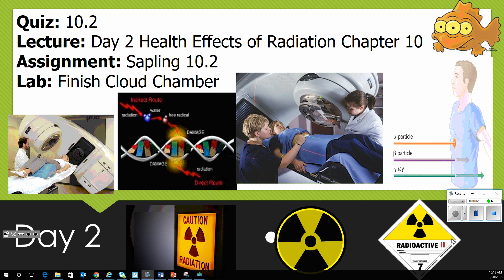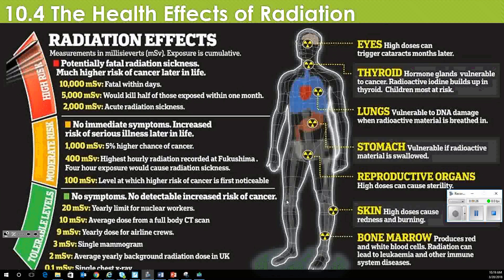Here we go with day two: health effects of radiation. Chapter 10 should be on Sapling 10.2. You should have finished quiz 10.2 and use the day after today's lecture to finish your cloud chamber lab. As we look at the health effects of radiation, there are a lot of things we need to consider. You'll notice that when you go to the hospital, they'll be wearing film badges to keep track of how much radiation they're getting.